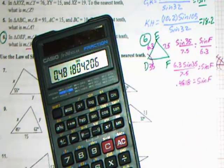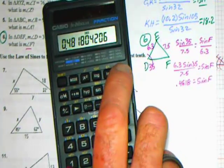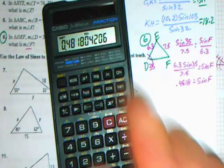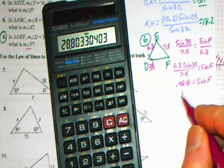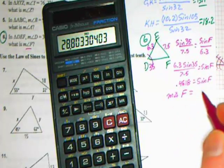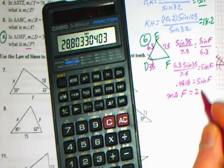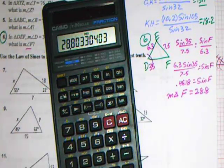That's equal to the sine of F. So we need to do sine minus 1, inverse sine, of .4818 and see what angle F measures. Then it needs to be measured to the nearest tenth. So second sine of .4818 comes out to be 28.8. So the measure of angle F is 28.8 to the nearest tenth.